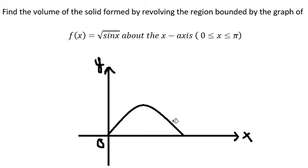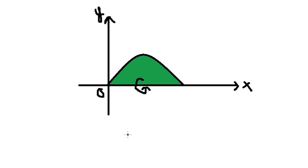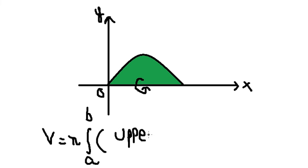We have this region here, and now this one rotates around the x-axis. So we have the formula for the volume. We have the upper function to the power of two minus the lower function to the power of two.